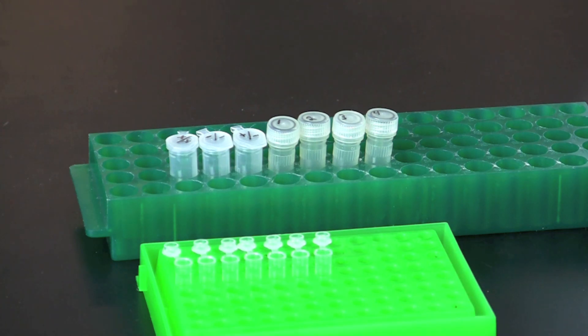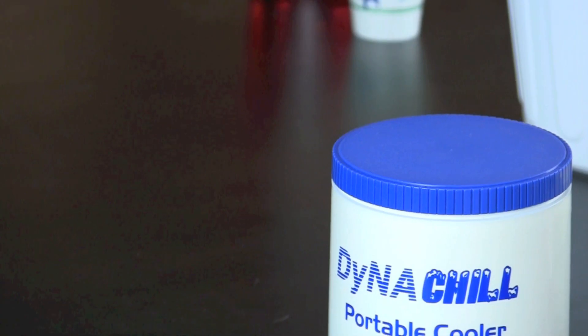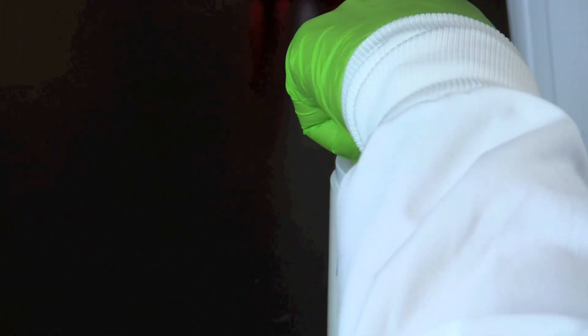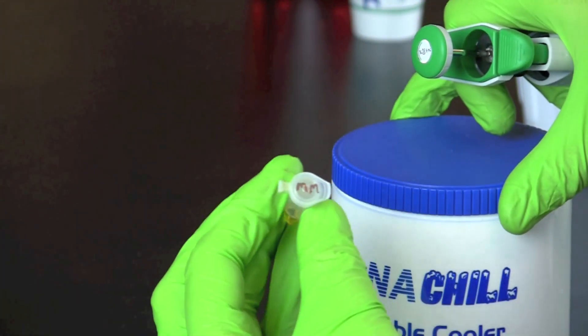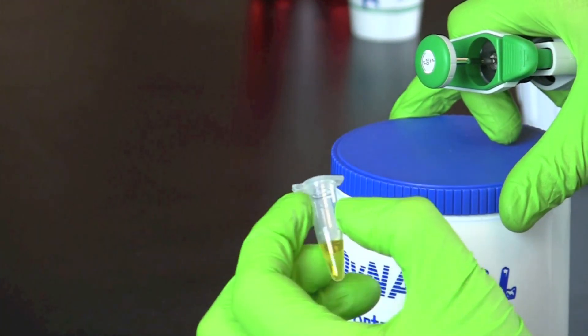Each group should also have a set of PCR tubes labeled to match the DNA template samples. Pipet 20 microliters of master mix into each of the PCR tubes.